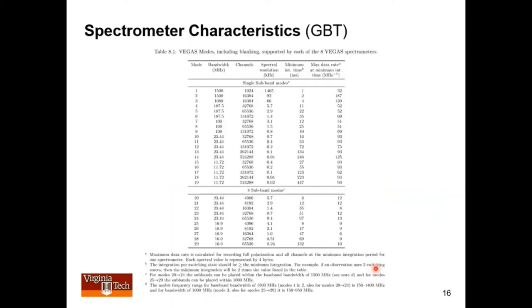I promised an example of spectrometer modes. This is the one from GBT, the GBT spectrometer is known as VEGAS. I've long since forgotten what it stands for but VEGAS is the primary spectrometer of the GBT and you can see it has 29 different modes here, different bandwidths, different numbers of channels, different spectral resolutions per channel.